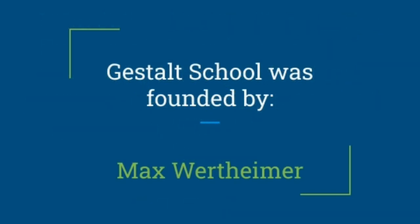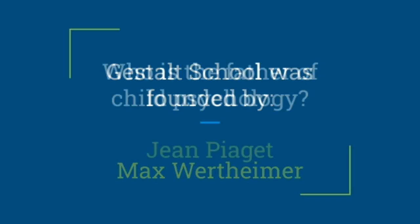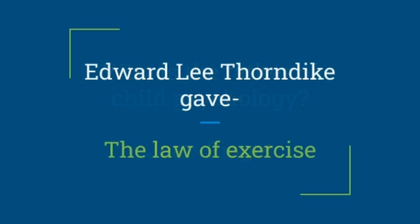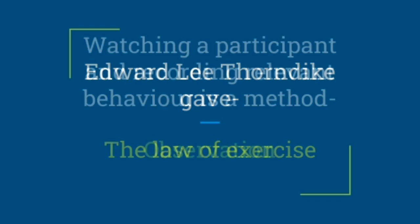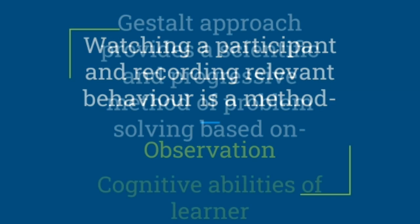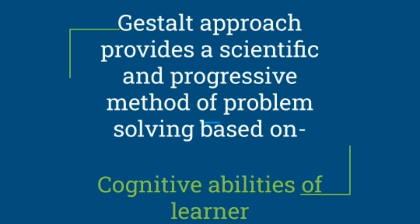Gestalt School was founded by Max Wertheimer. Who is the father of child psychology? Jean Piaget. Jean Piaget is the father of child psychology. Edward Lee Thorndike gave the law of exercise. Watching a participant and recording relevant behavior is a method used in observation. Gestalt approach provides a scientific and progressive method of problem solving based on the cognitive abilities of the learner.